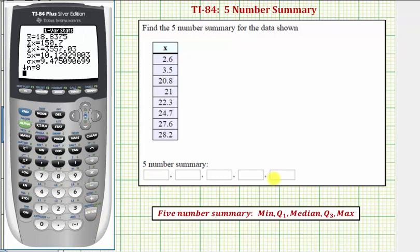Now we'll find the five-number summary values on the next screen, so press the down arrow. Notice the min is 2.6, the first quartile is 12.15, the median is 21.65, the third quartile is 26.15, and the max is 28.2. These values are the five-number summary.